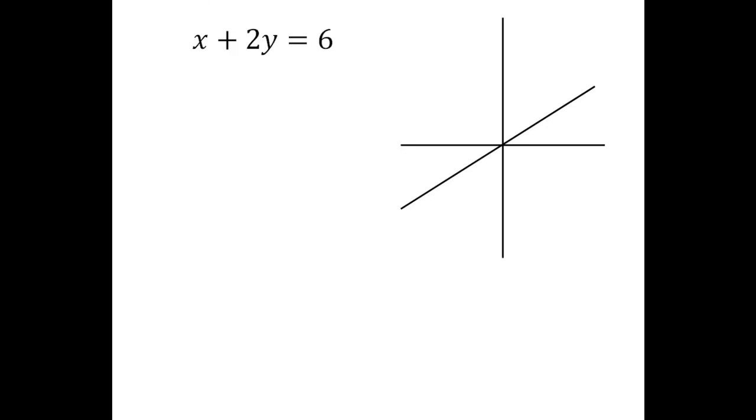One of the things to notice is that this is a plane. We have the standard form ax plus by plus cz equals d. But the other thing to notice is that the coefficient of the z term is zero.